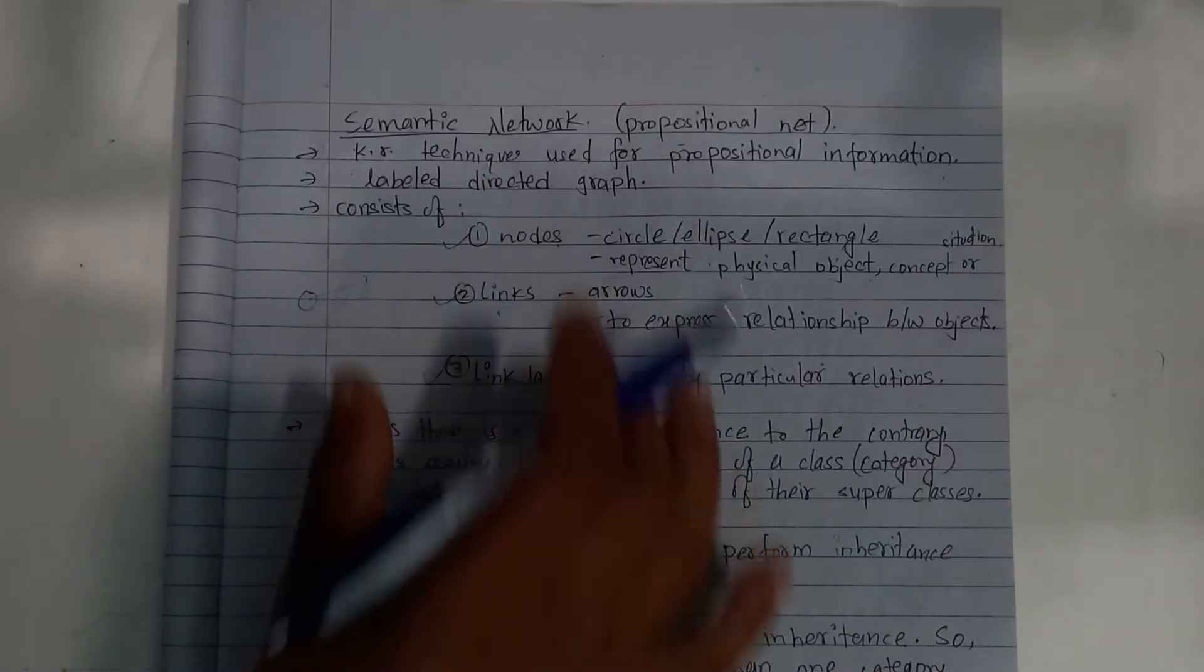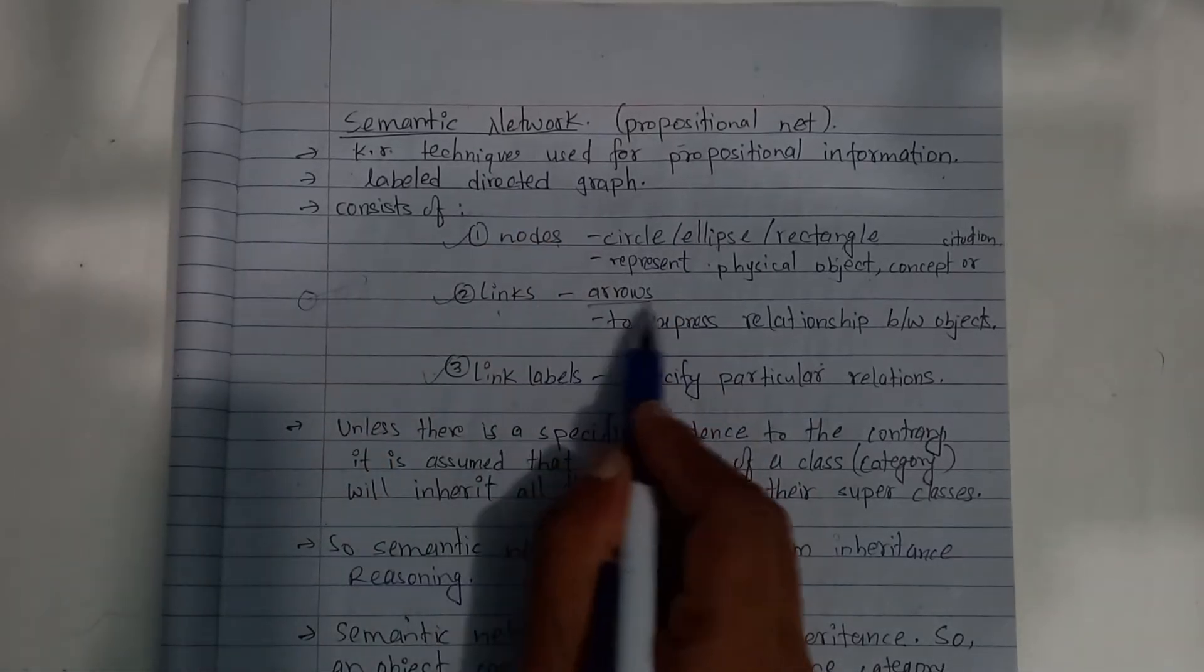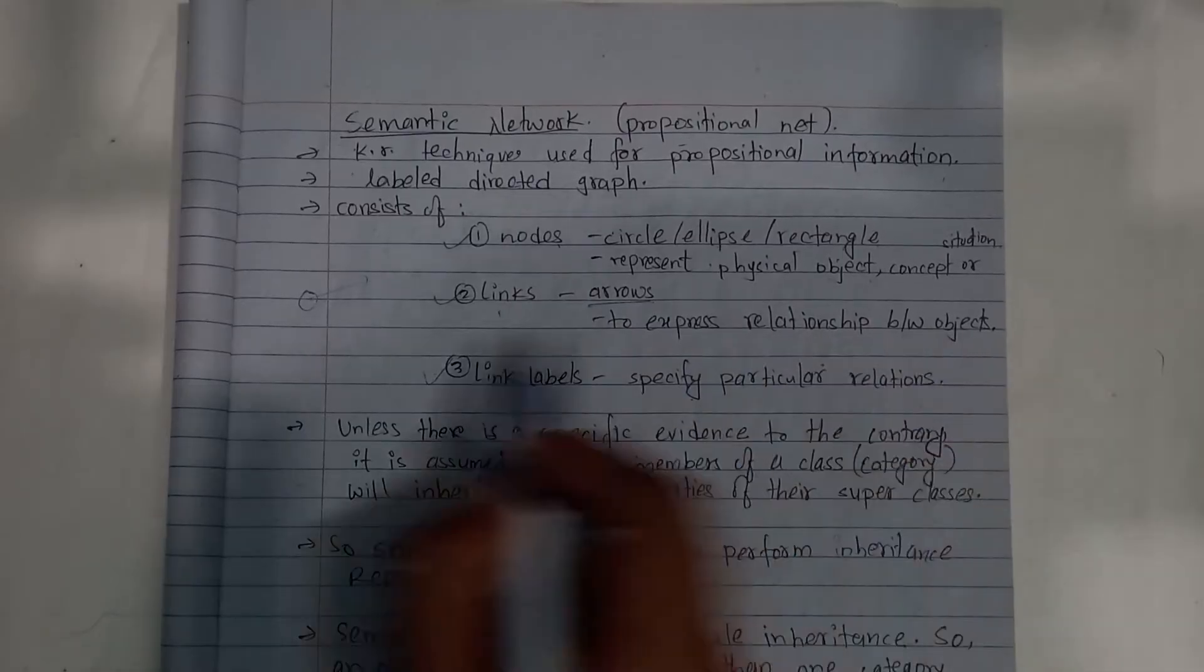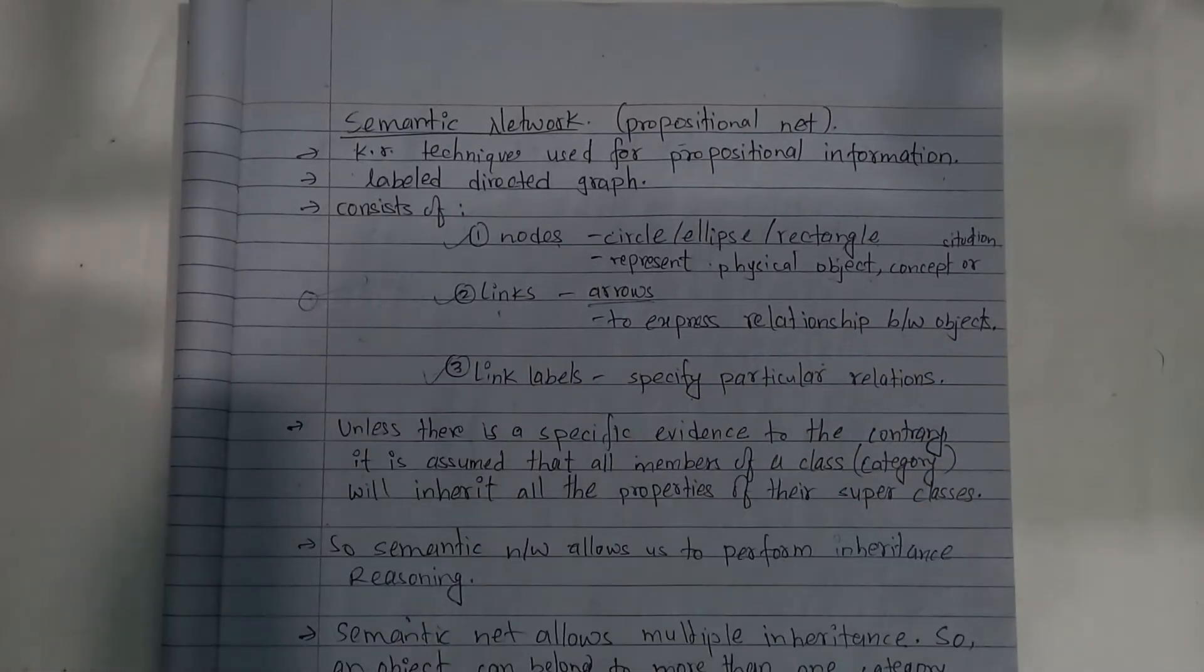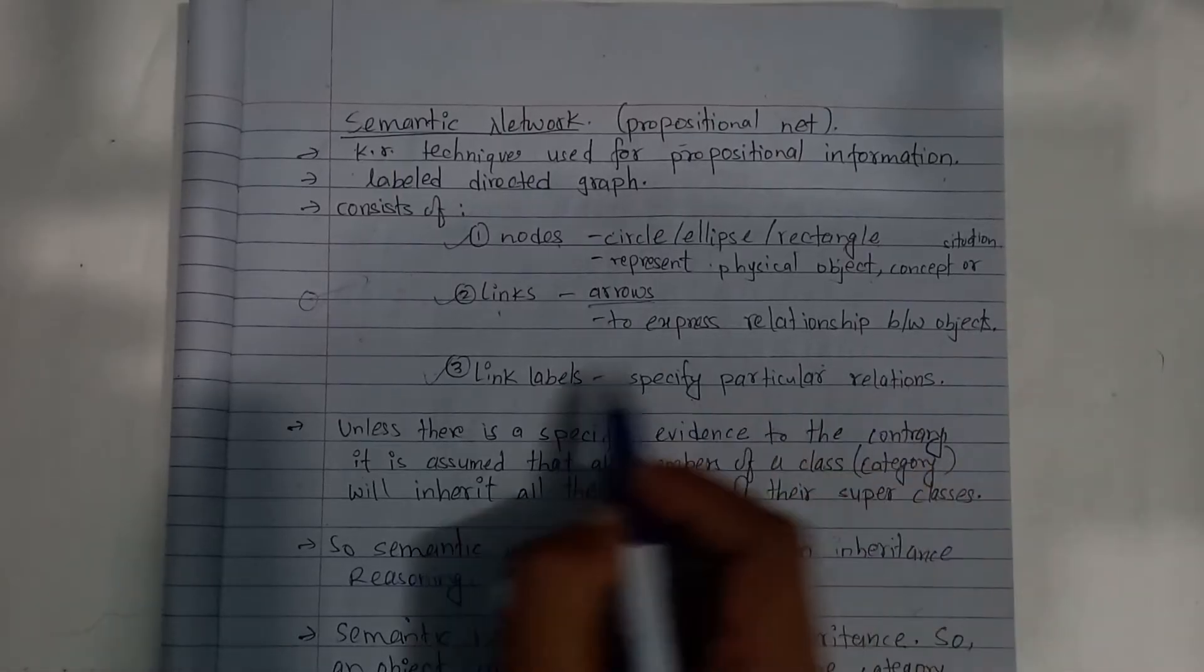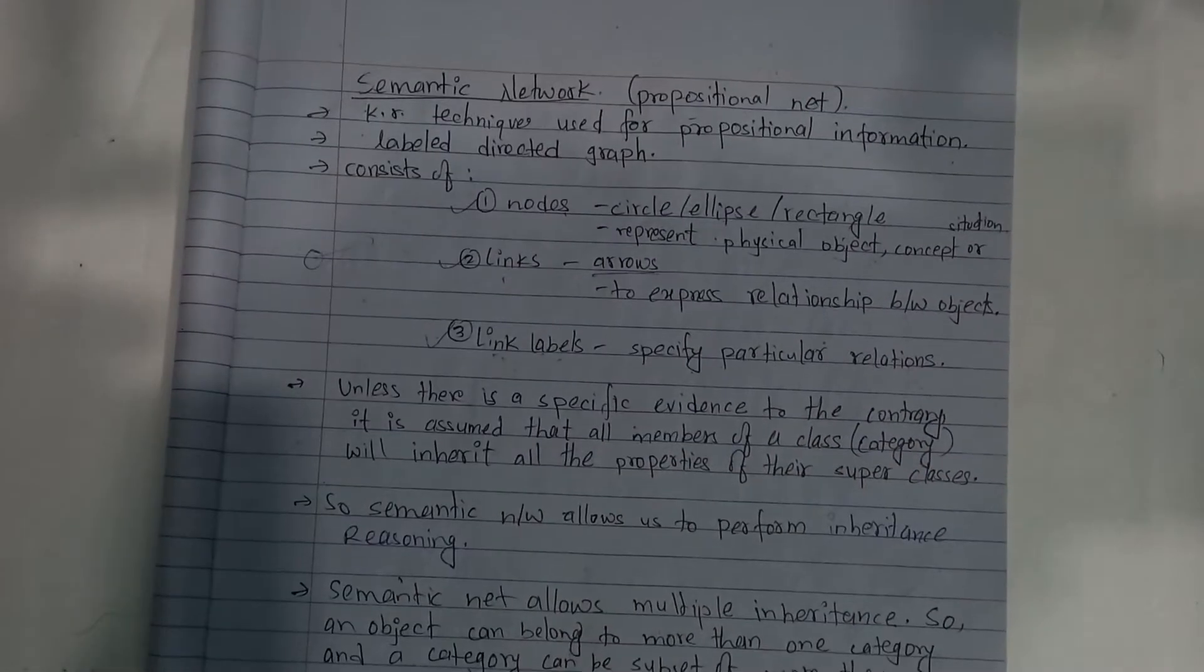Links express the relationship between objects. A particular relationship is represented by a link with labels.